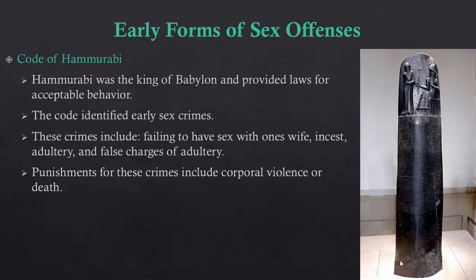Hammurabi's Code speaks about a variety of different issues including household issues, workplace issues, and family issues like divorce, inheritance, and other types of events. The Code also speaks to sexual crimes as well. For example, it is currently not a crime if you don't want to have sex with your wife, but in ancient Mesopotamia it was essential for married couples to reproduce for population purposes. Other items are still illegal today such as incest, and adultery remained illegal in the United States and around the world for a long period of time, and currently remains the basis for many divorces in the US as well as other countries.